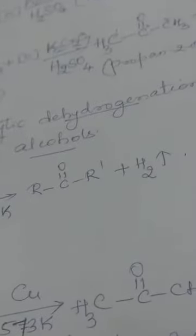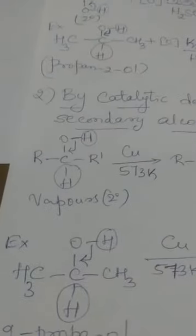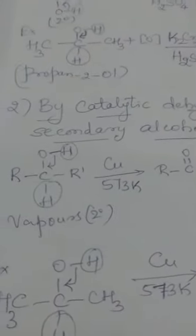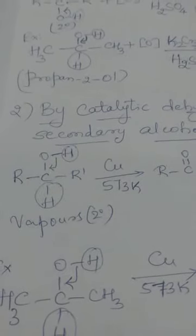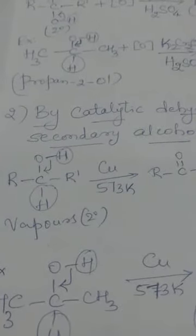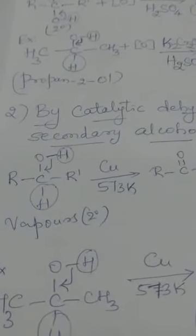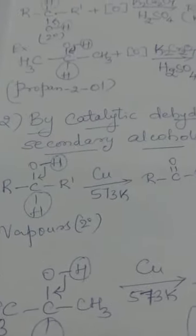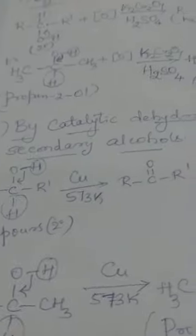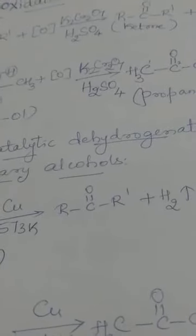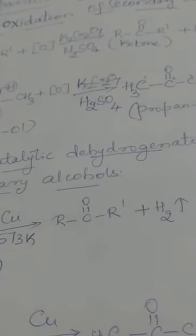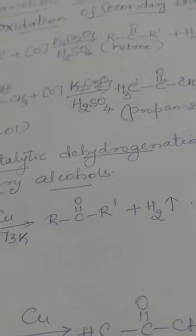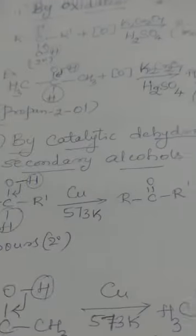You must take the vapors of a secondary alcohol. Vapors of a secondary alcohol, on passing through a copper catalyst at a temperature of around 573 Kelvin, H2 is eliminated and you get the product as ketone: R-C=O-R' plus H2. This is the dehydrogenation reaction of secondary alcohols.